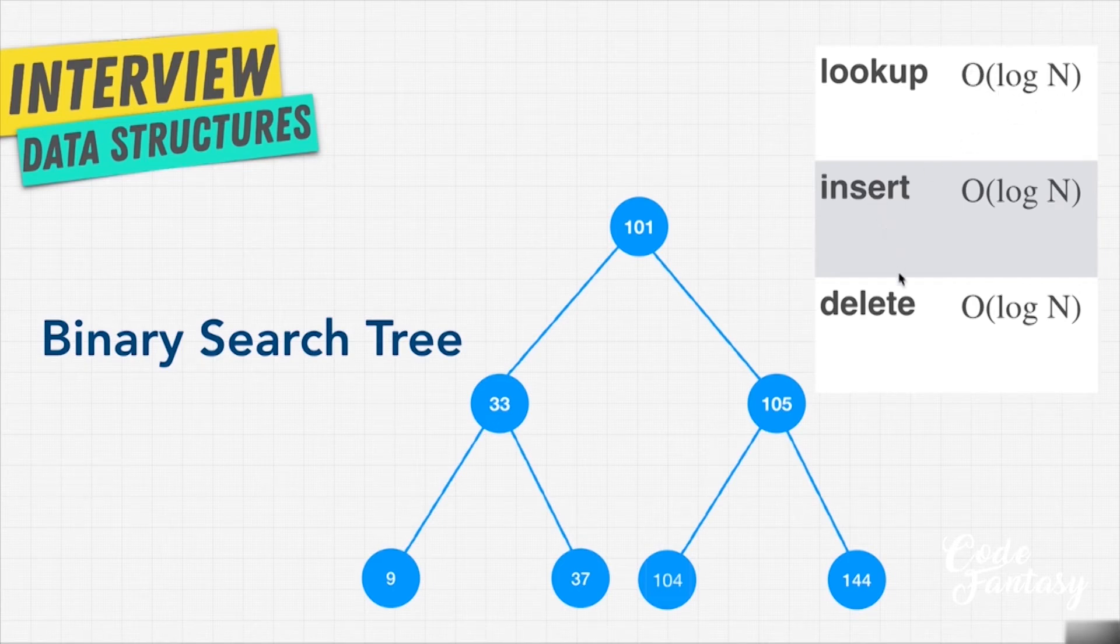But what about insert and delete? In a hash table, I can do insert and delete really fast at O(1) or constant time. But with a binary search tree, it looks like I can only do O(log n). And that should be obvious, right? Because in order for us to insert or delete something in a binary search tree, we need to figure out where to insert the item or where the item is before we delete it. For example, with 105, let's say that we want to delete 105.